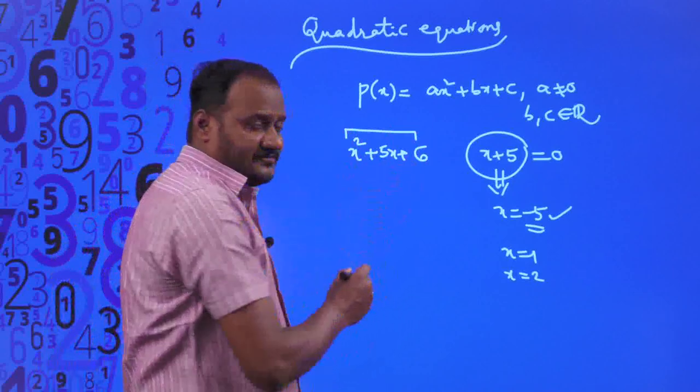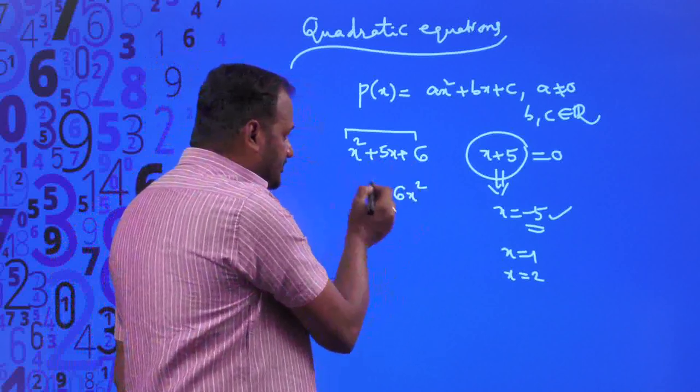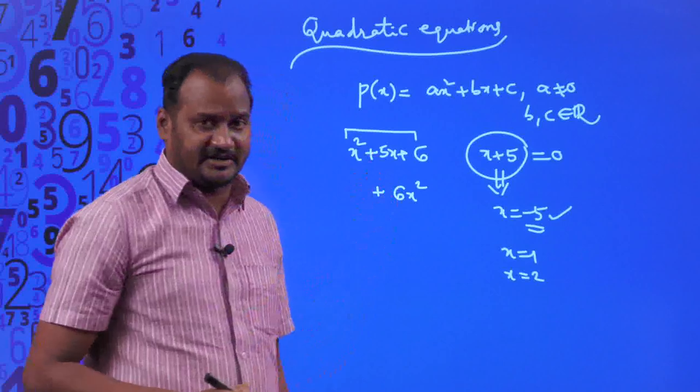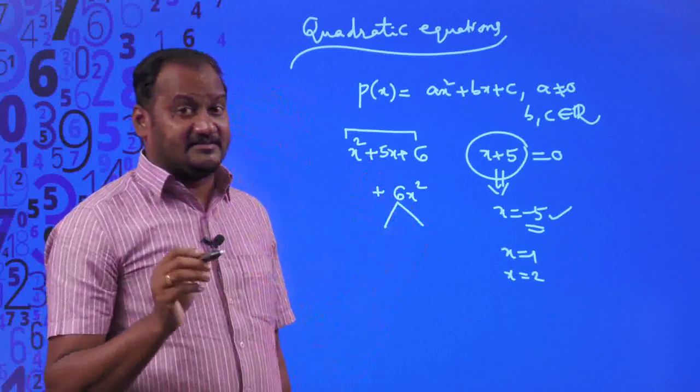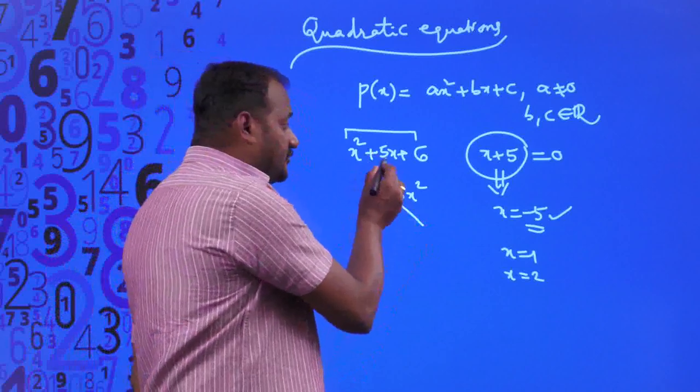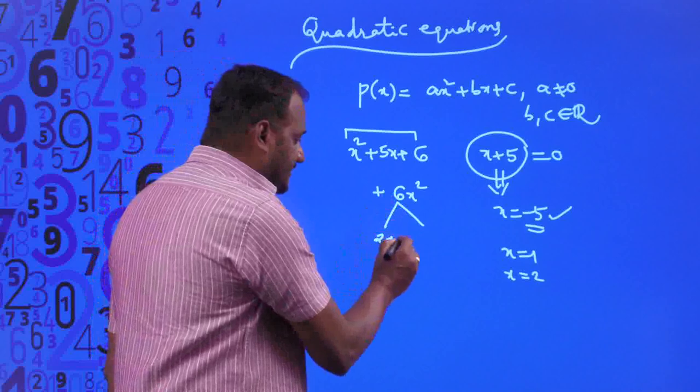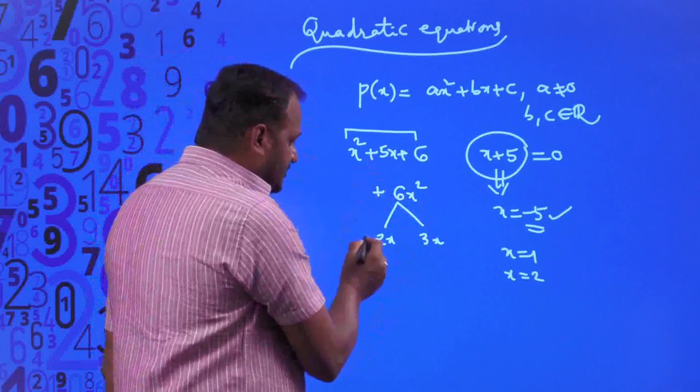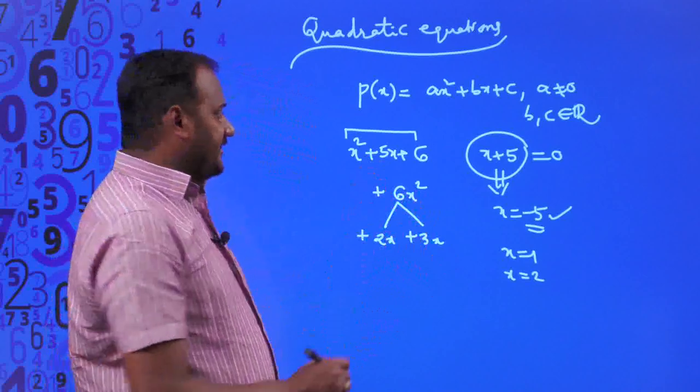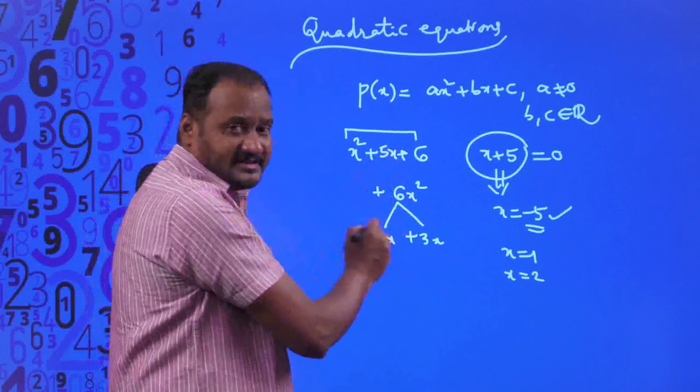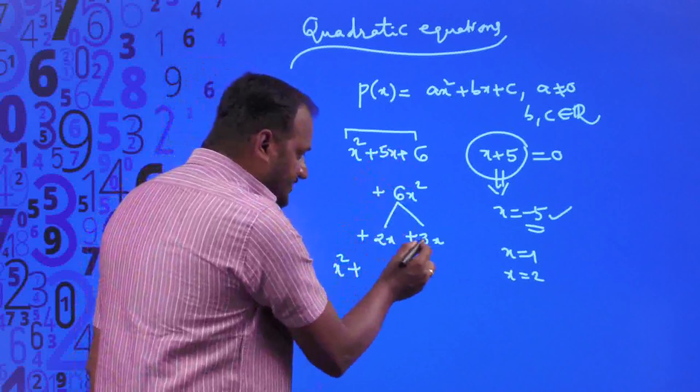Since the product of x² and 6 is 6x², and moreover this is positive and that is positive, we get positive 6x². Now, if you split this 6 into two terms such that the sum of the two factors is positive 5, the factors of 6 are 2x and 3x. Since this is positive, both terms are going to be positive. Then you can split 5x as 2x + 3x. Therefore, x² + 5x can be written as x² + 2x + 3x...